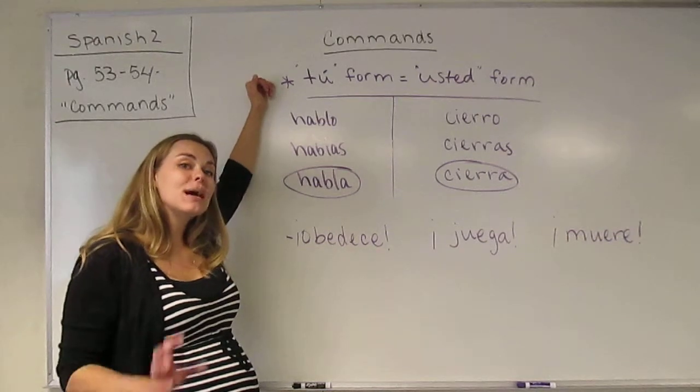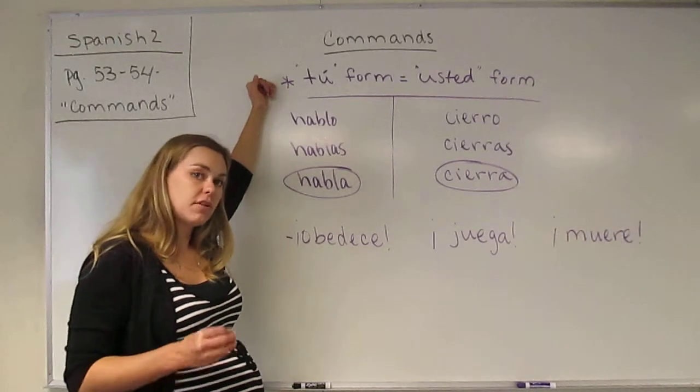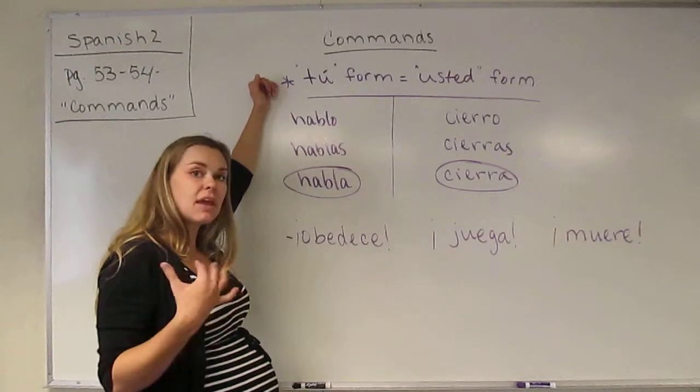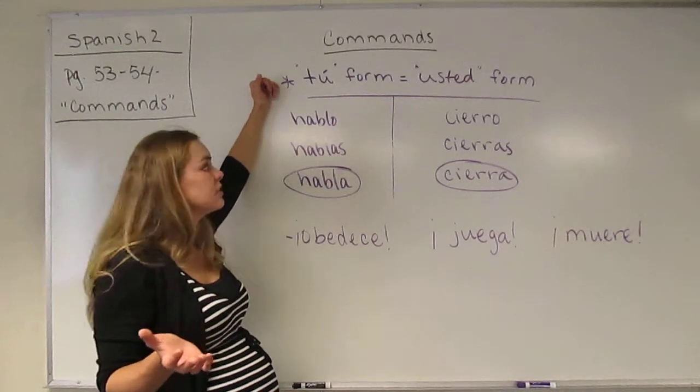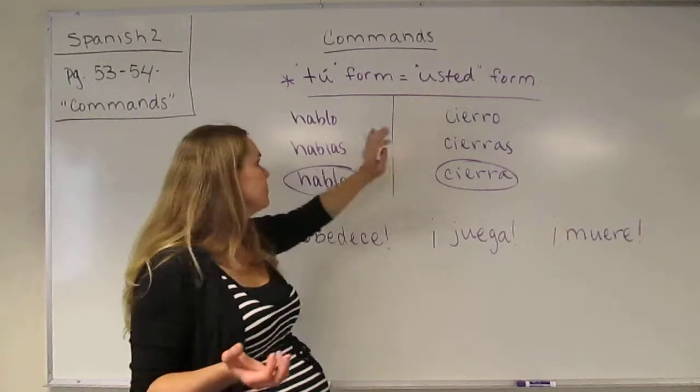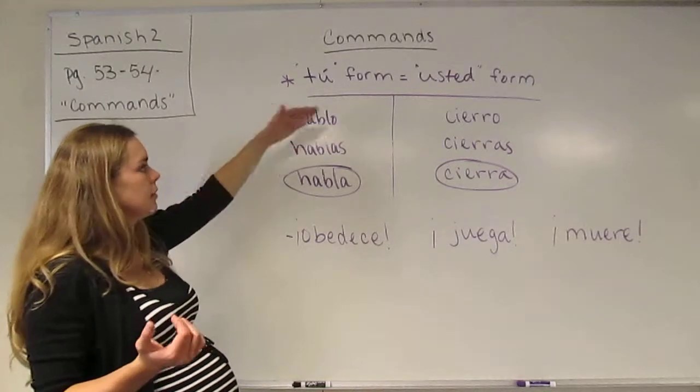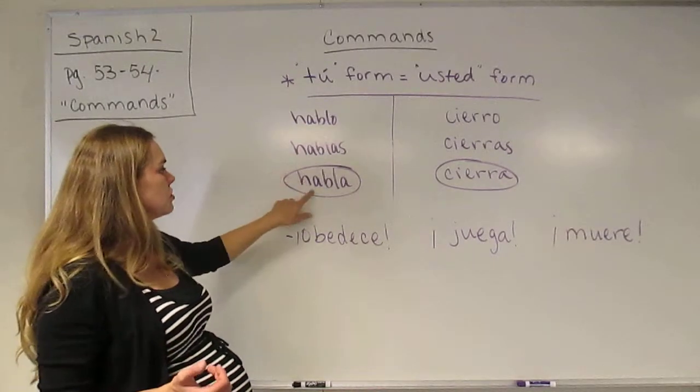Instead of using the tú form, the command form, if you're talking to a person who is younger than you or who is the same age or who is your sibling or something, you would use the usted form. So, if our conjugation table is hablo, hablas, habla, hablamos, habláis, hablan, you would choose the usted form.